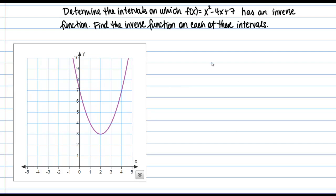What we can do to get around that is look at a piece of this function at a time — basically restrict its domain to a part that is one-to-one, and then we can find the inverse on that interval. That's what this first sentence is referring to: determine the intervals on which this function has an inverse function.